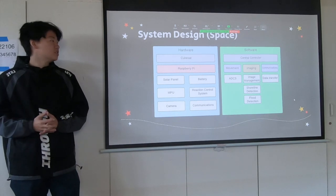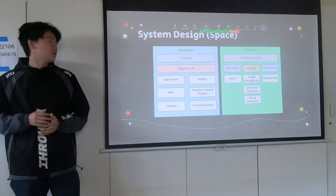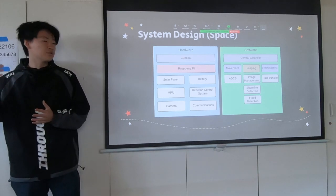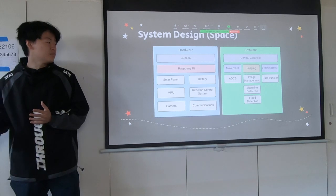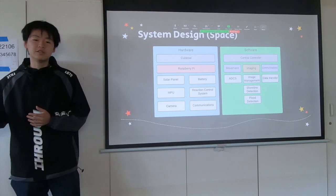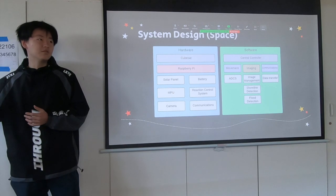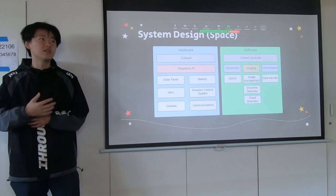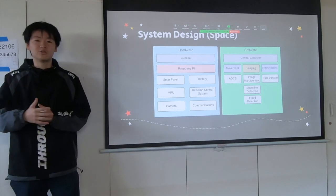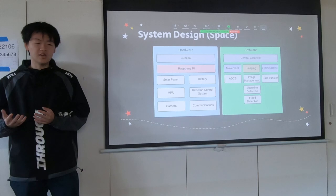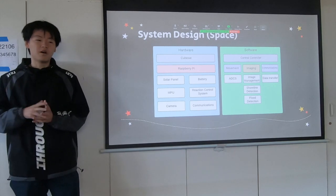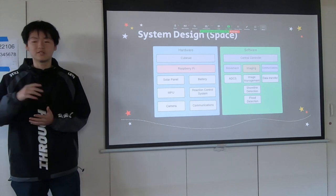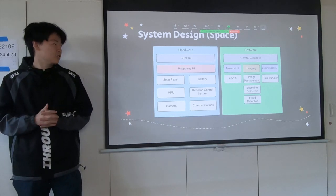These are the components of our system design. For hardware, we have our CubeSat, and the key component is a Raspberry Pi that contains all the programs. We also have a solar panel and battery which powers up the entire system. We have an MPU and reaction control system which controls where the CubeSat goes to take pictures. The camera is the part of the Raspberry Pi that takes pictures, and we have a communication system to communicate with the ground station.